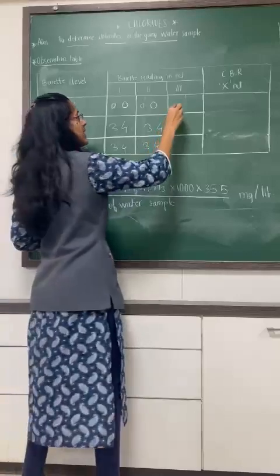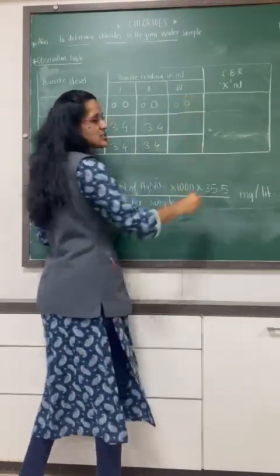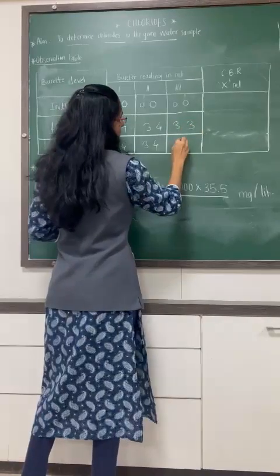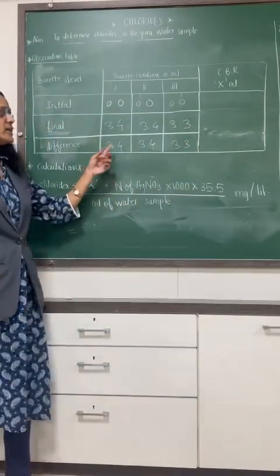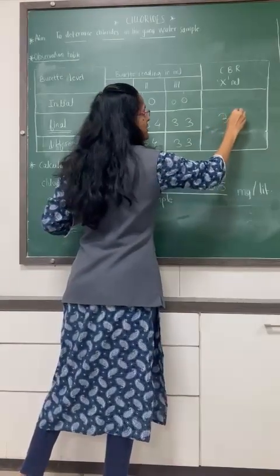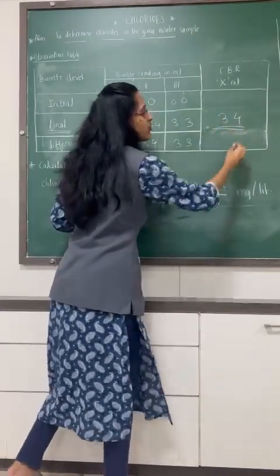If we repeat the same set, then initial is zero, final is 3.3, and difference is 3.3. Here is constant burette reading. So note down the constant burette reading, it is 3.4.